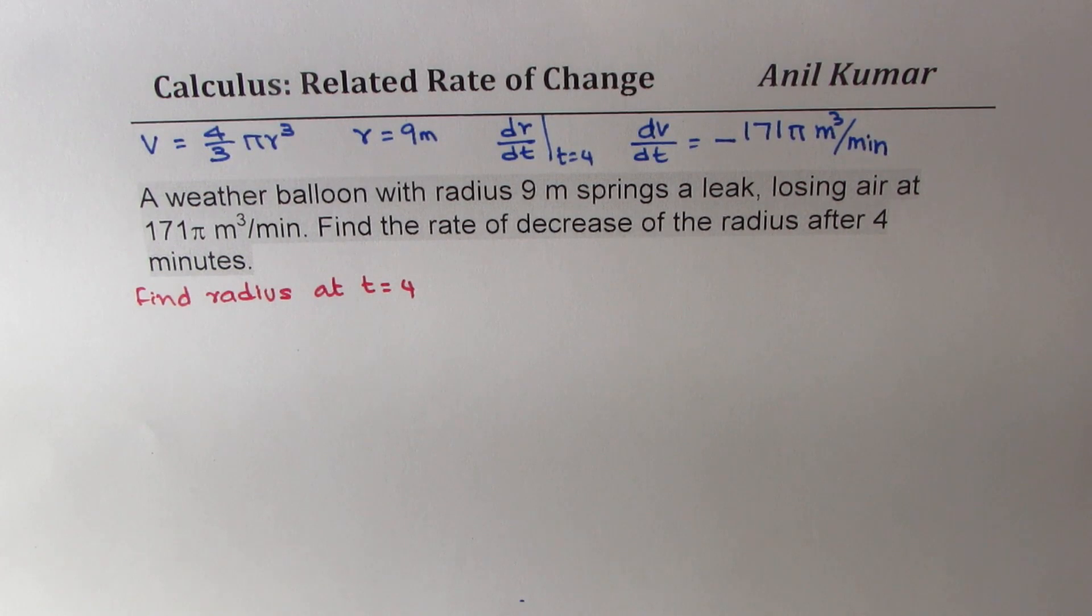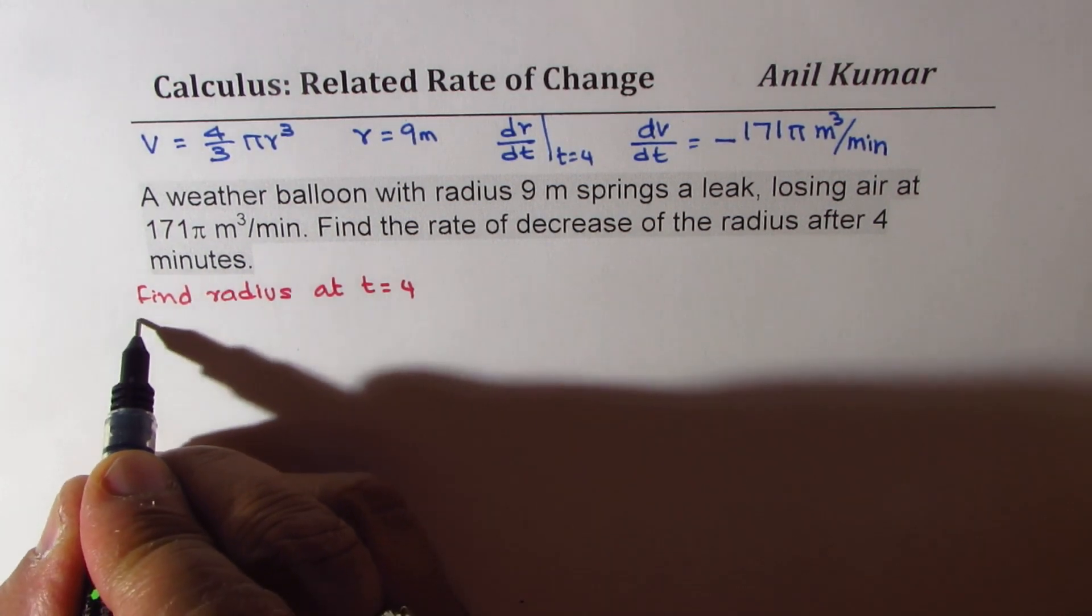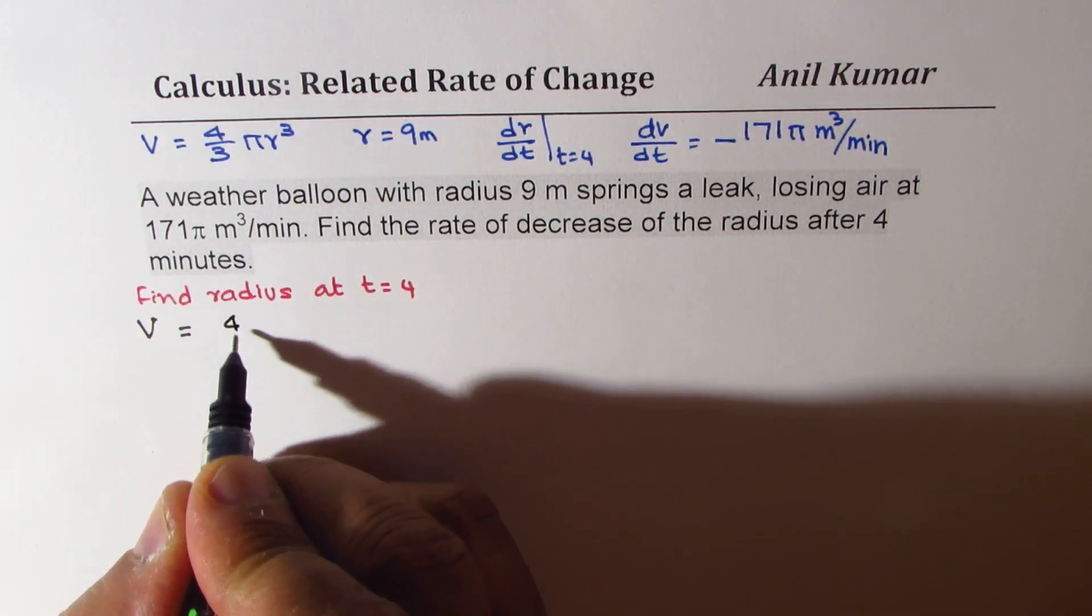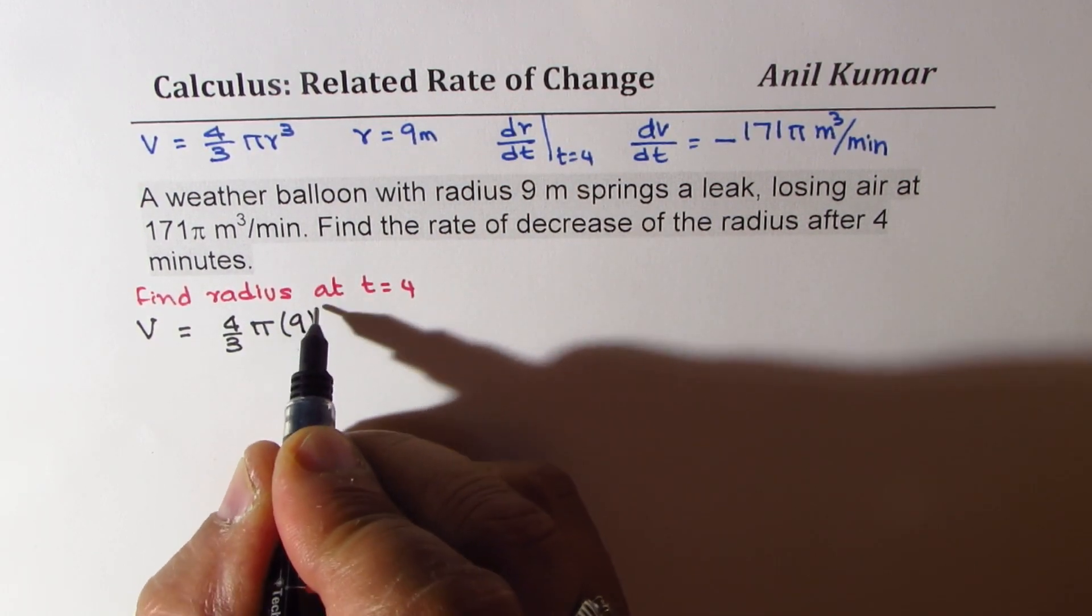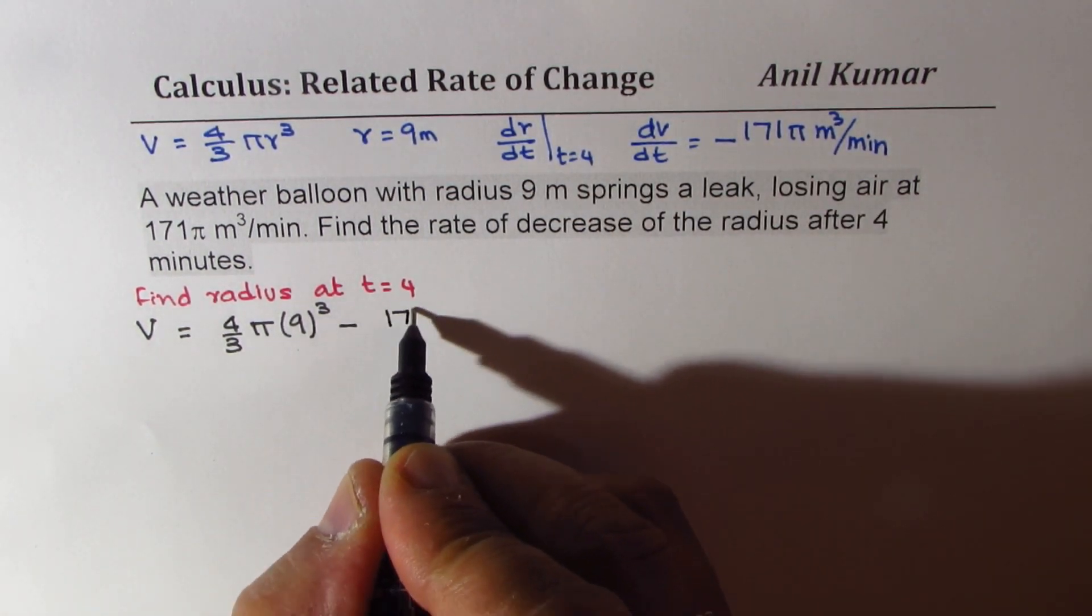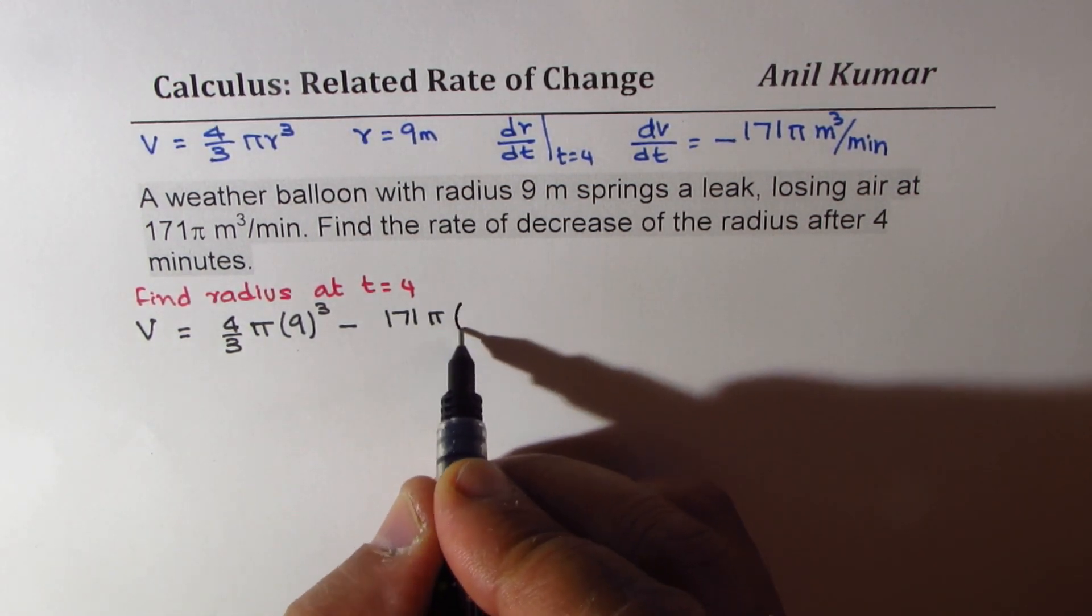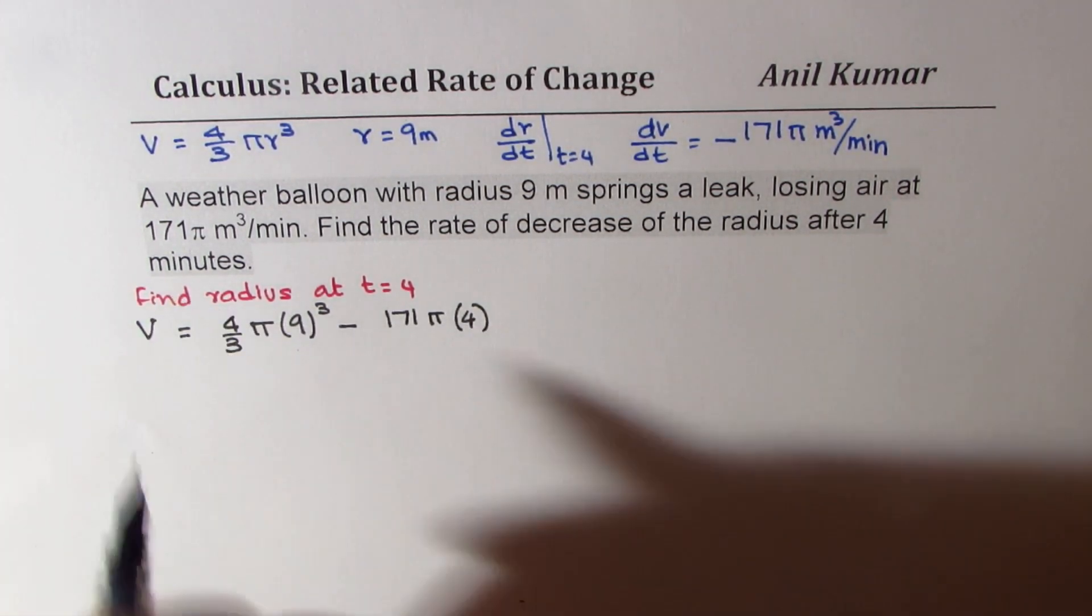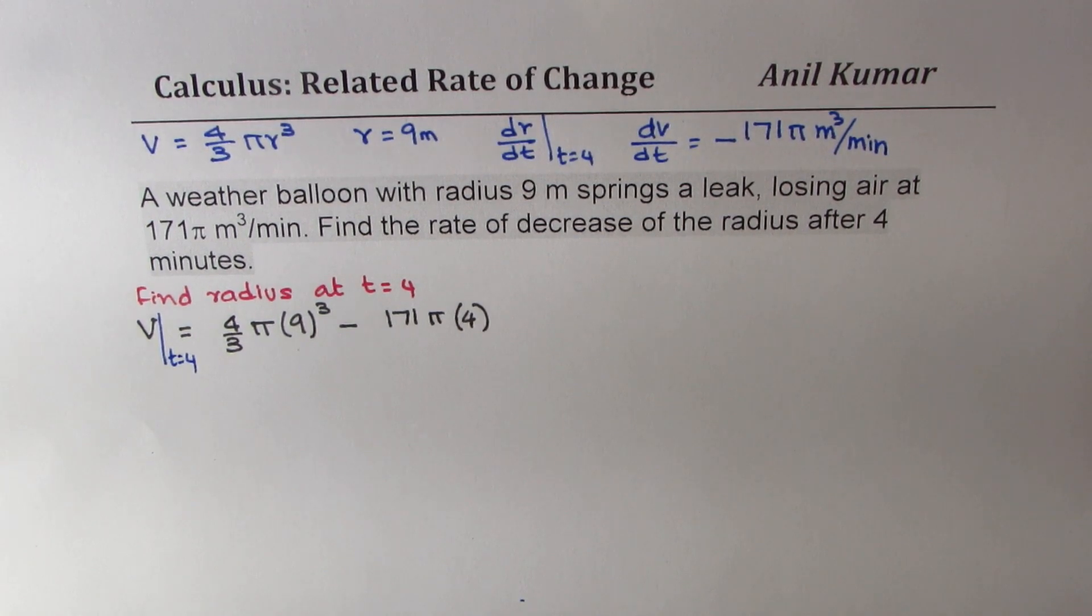How do we do that? Now we know that initially the radius is 9 meters, so the volume is basically 4/3 πr³, which is 4/3 π(9)³ minus it is decreasing at this rate 171π per minute. So in 4 minutes what is going to be the volume? Times 4. So that is the decreased value of the volume.